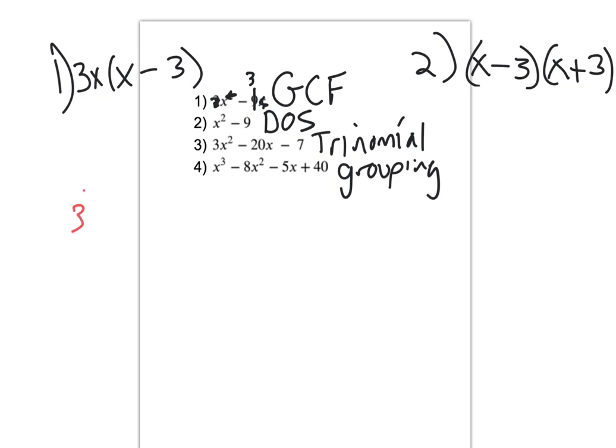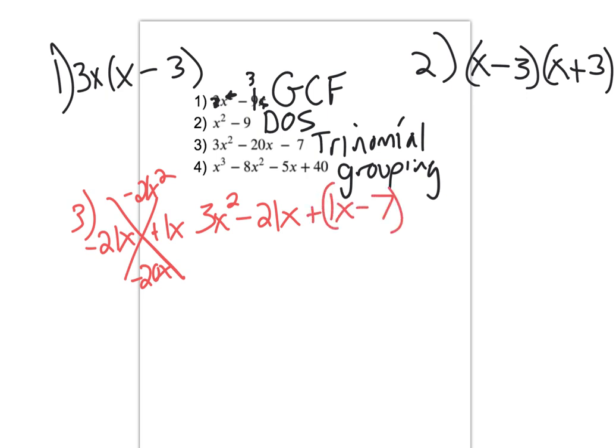Problem 3, I'm going to use the x method. A times c, I have negative 21x squared, negative 20x. So I have negative 21x, positive 1x. So my answer would be 3x squared minus 21x plus 1x minus 7. Okay, group those. 3x squared. So now I have GCF twice. So I can factor out 3x. I'd be left with x minus 7.